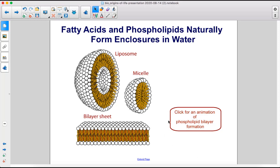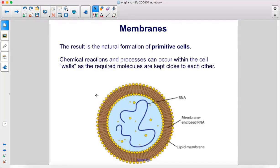Click here for an animation of phospholipid bilayer formation. The result is the natural formation of primitive cells. Chemical reactions and processes can occur within the cell walls as the required molecules are kept close to each other. Here we have the RNA, membrane, enclosed RNA, and the lipid membrane.